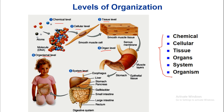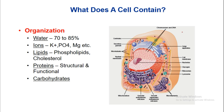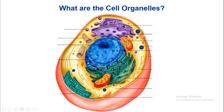What does the cell contain? The organization of the cell includes water, around 70 to 85 percent; ions such as potassium, phosphorus, magnesium, etc.; lipids — phospholipids and cholesterol; proteins — structural and functional; and carbohydrates. The cell contains all these things. What are the cell organelles?